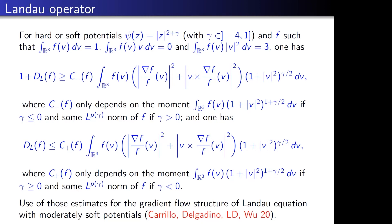This new estimate was used to provide the gradient flow structure for the Landau equation, done in work with José Carrillo, Mathias Delgadino, and Jeremy Wu. Unfortunately, this works only for moderately soft potentials, not yet for the Coulomb potential. So the gradient flow structure is not yet effective for the physical equation.